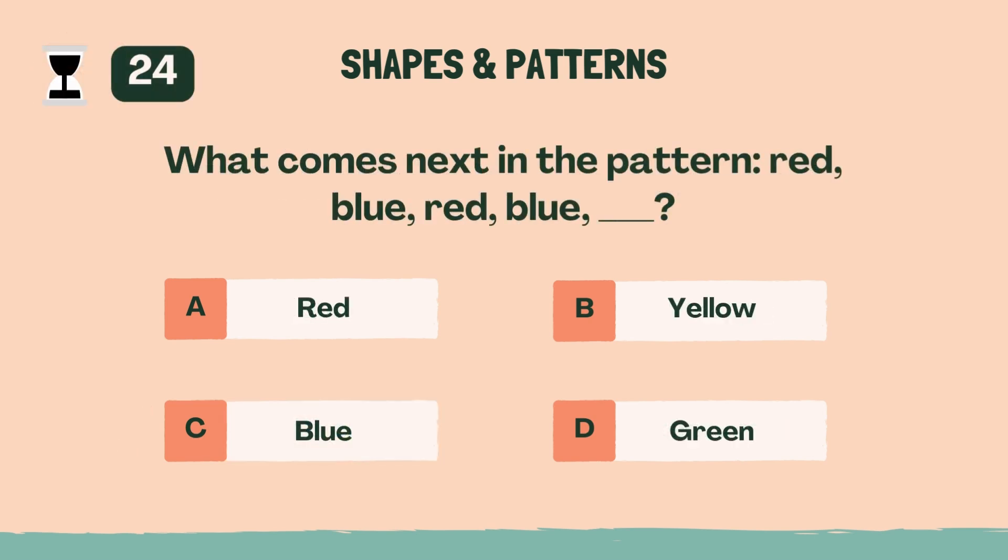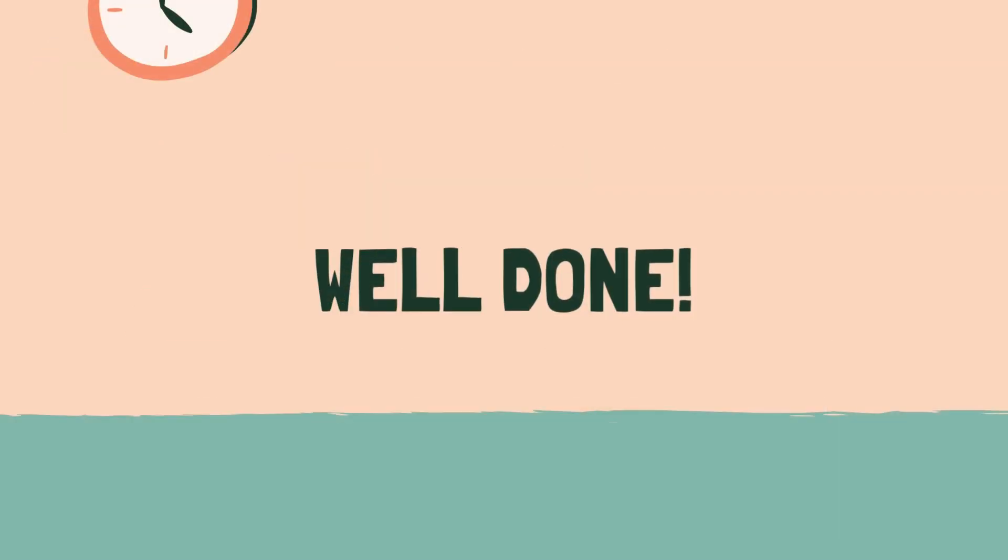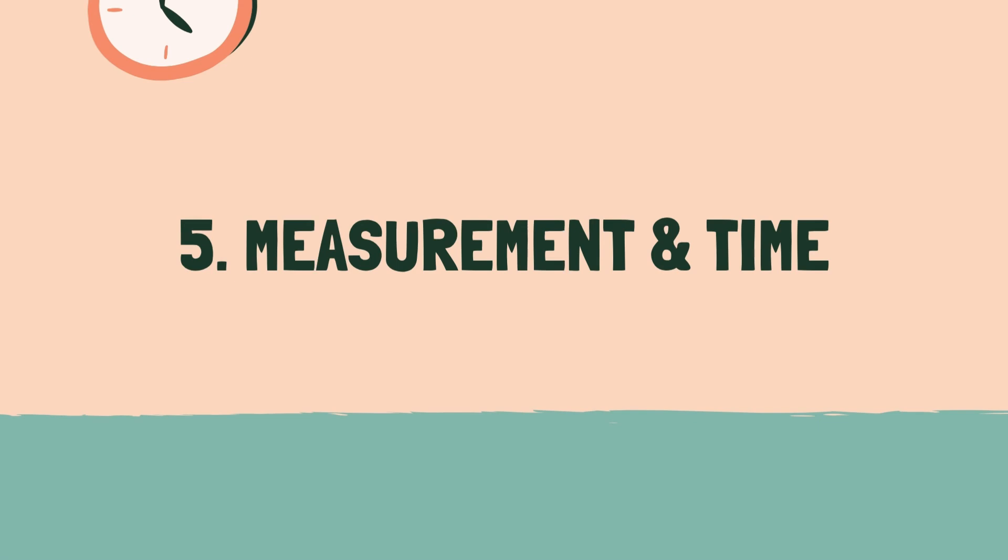What comes next in the pattern? Red, blue, red, blue. A, red. Well done. Let's move on to the next category. Category 5. Measurement and time. 3, 2, 1, go.